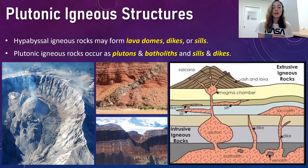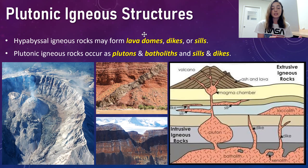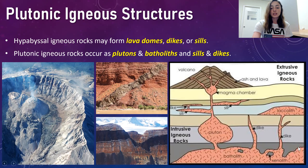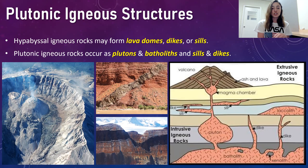Before going into detail on volcanic structures, I want to clarify the plutonic or intrusive igneous structures we'll cover next time. These include things like lava domes, dykes, and sills for hypabyssal igneous rocks — hypabyssal meaning shallowly intrusive. Plutonic igneous structures include plutons, batholiths, and also sills and dykes. Plutons and batholiths are deeper in Earth's crust and are essentially magma bodies. We'll cover those larger-scale intrusive structures in the next video.